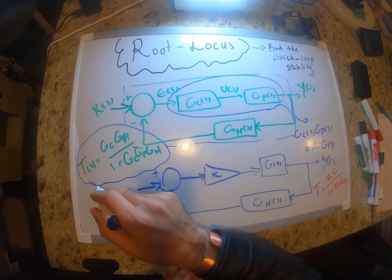This closed-loop system now converts to one where we replace Gc·Gp by K times G(s), where K is a scalar and G(s) contains all the terms with s. So K·G(s) equals Gc(s)·Gp(s). The closed-loop transfer function becomes K·G(s) divided by one plus K·G(s)·GH(s).